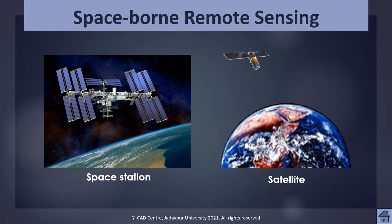In space, remote sensing is conducted mainly from satellites and is called satellite remote sensing, also known as satellite-borne remote sensing. Satellites are objects which revolve around another object — in this case, the earth. The moon is a natural satellite, whereas man-made satellites include platforms launched for remote sensing, for telecommunication, for television broadcasting, etc.